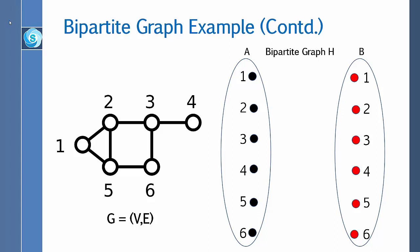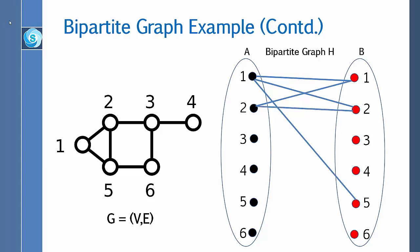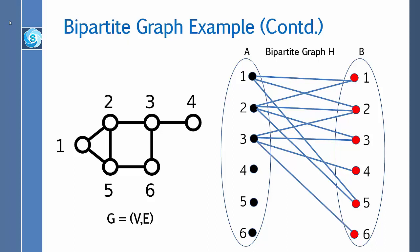Vertex one is adjacent to one, so we put an edge between one from A and one from B. One is also adjacent to two, so we put an edge between one and two. One is adjacent to five, so we put an edge between one and five. Vertex two is adjacent to one, two, three, and five. Vertex three is adjacent to two, three, four, and six, so we put edges between them.